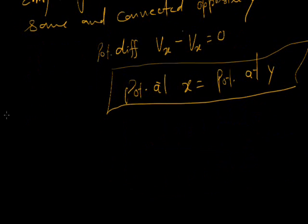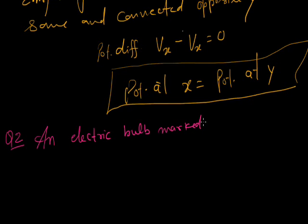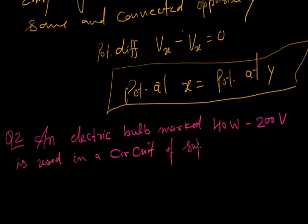In this case, come to the next solution. An electric bulb marked 40 watt and 200 volt is used in a circuit of supply voltage 100 volt. Now find the power.